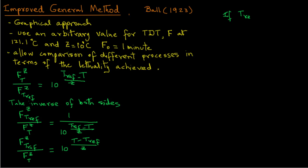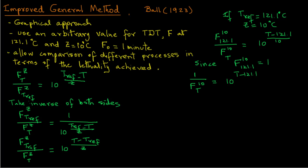Now if we consider Tref as 121.1 degree C and Z of 10 degree C, these reference values of course refer to Clostridium botulinum, the most important pathogen that we must consider in canning. So we have F^10_121.1 divided by F^10_T equals 10 raised to the power T minus 121.1 divided by 10. And since we are going to arbitrarily select F^10 at 121.1 equals 1 minute, we can substitute that in our equation. And we get 1 over F^10_T equals 10 raised to the power T minus 121.1 divided by 10.